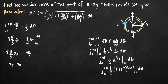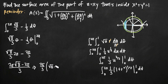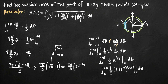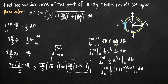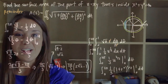Simplifying: 2 pi root 8 minus 2 pi, all over 3. Factoring out 2 pi over 3 gives 2 pi over 3 times the quantity root 8 minus 1. Since root 8 equals the square root of 4 times 2, we can simplify root 8 as 2 root 2. Therefore the final answer is 2 pi over 3 times the quantity 2 root 2 minus 1. That is the surface area of z equals xy that lies inside the circle x squared plus y squared equals 1.